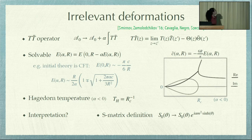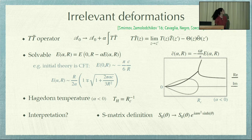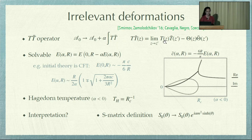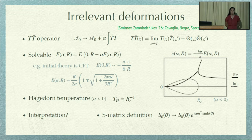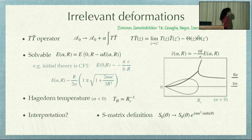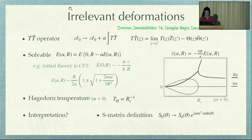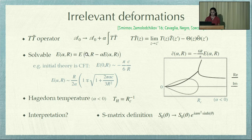Let's pass to the motivation. The first thing I want to talk about is TT-bar. The idea is that you can start with some known theory described by some action A0, and then you deform the theory with some irrelevant operator with some parameter alpha. This operator is constructed out of the stress tensor of the theory. Even though this is an irrelevant deformation and we would expect to lose control, these are actually solvable — we can compute exactly some observables in the deformed theory in terms of the undeformed one. For instance, if we are looking at some energy level, we can extract this energy in the deformed theory in terms of the undeformed one.